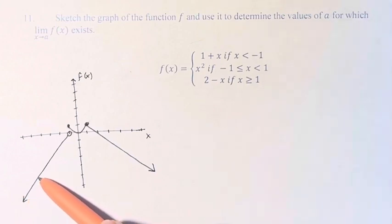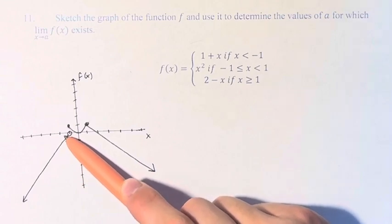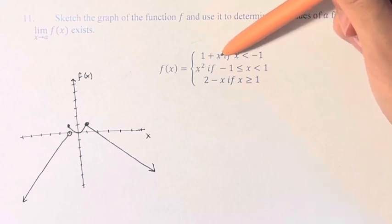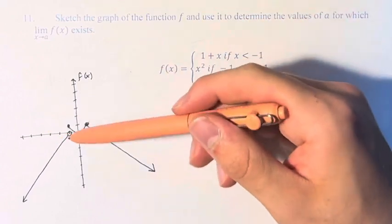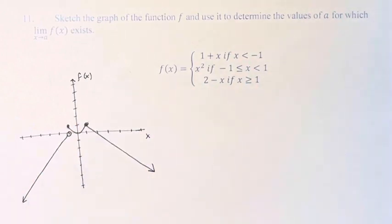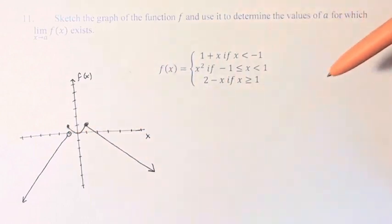So we see it's all the way up here, completely continuous. That's because it's all on this one function. Then we jump from 1 plus x to x squared, and we can see as x approaches negative 1 from the left and the right, they approach different points.